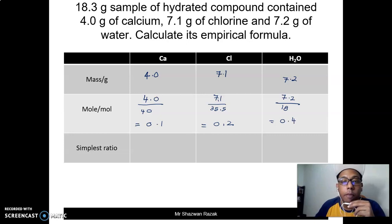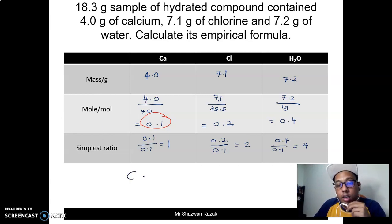For simplest ratio, apa kita akan buat, kita akan divide semua benda ni dengan nilai yang terkecil. Kalau kita tengok di sini, nilai yang paling kecil adalah 0.1. So apa yang kita akan buat, kita akan kira 0.1 divided by 0.1 which is equal to 1. Cl pula, 0.2 divided by 0.1, ini adalah 2, dan 0.4 divided by 0.1 is equal to 4.